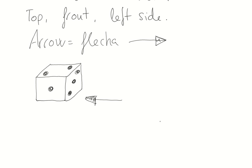So let's draw now. We have to begin from the top. The top is as if you were a little fly, and it's the view you have when you are flying over the dice. This is the top because you are looking at the dice from the top. Let's put the holes — this is the number two.